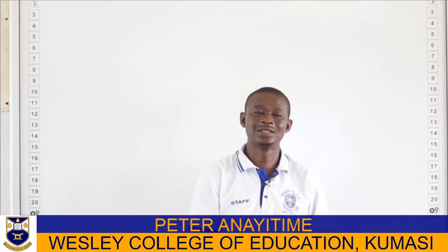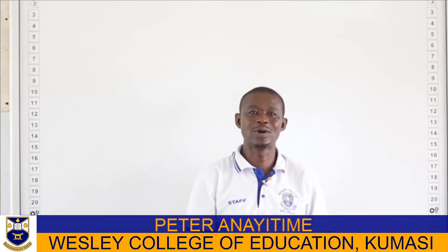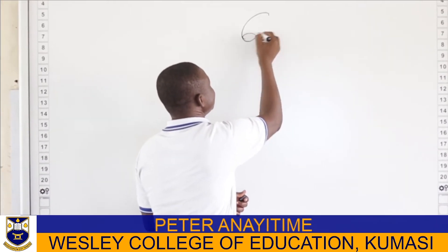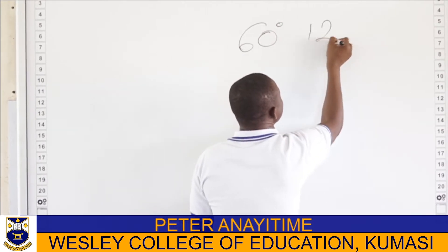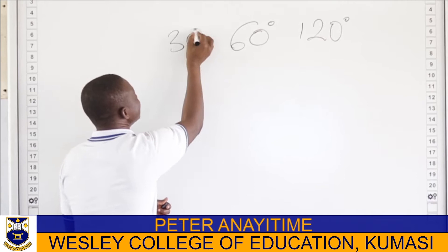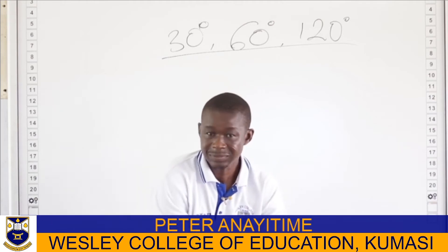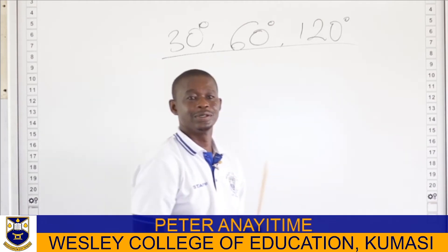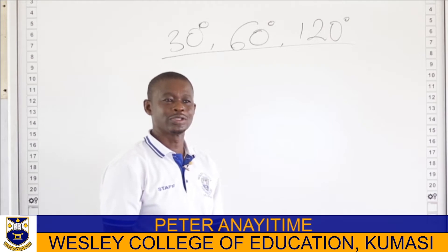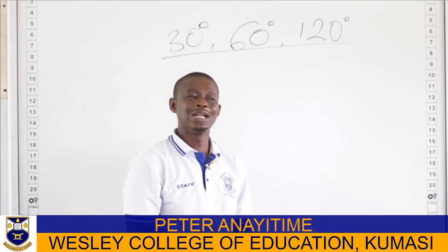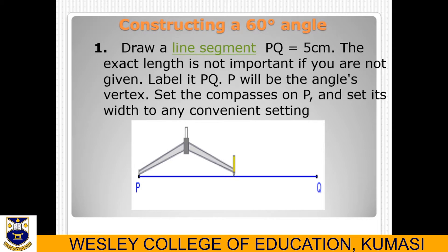Let's start with angle 60, 120, and then 30 degrees. To construct these angles, let's first get a line segment. Assume I have a line segment which measures five centimeters.